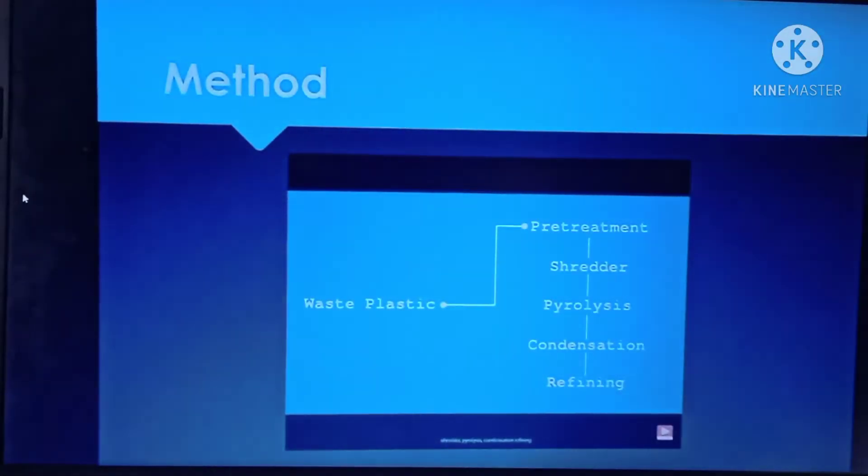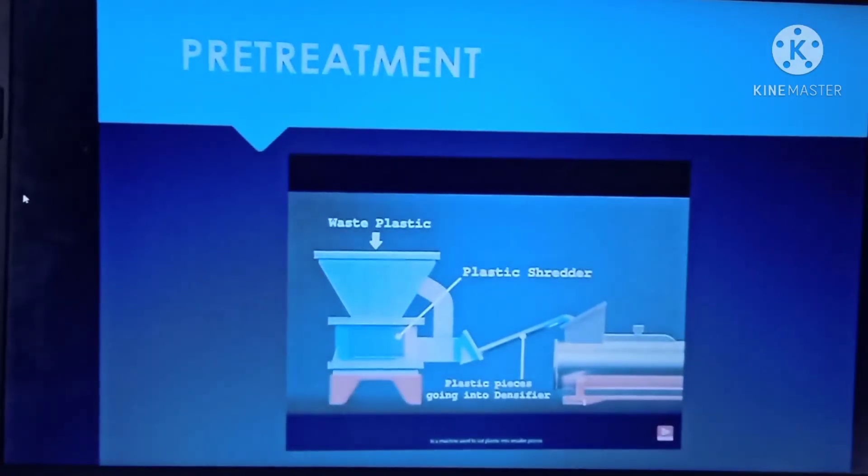Now let us see how plastic is actually converted into fuel or many useful resources. There are many steps involved in plastic pyrolysis process but we are simply going to see five steps: pretreatment, shredder, pyrolysis, condensation, and refining.